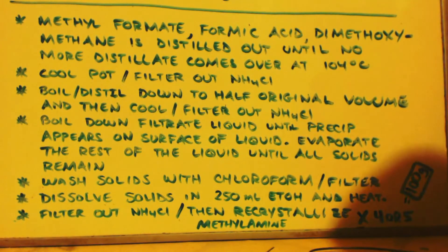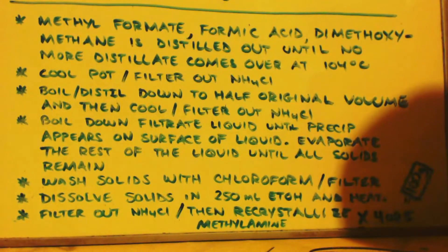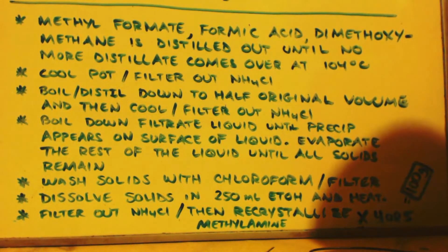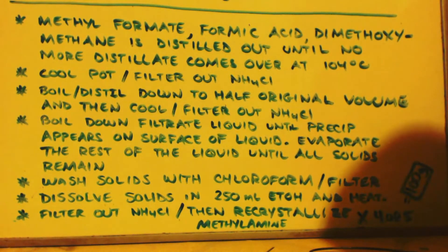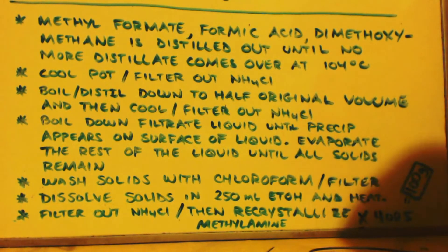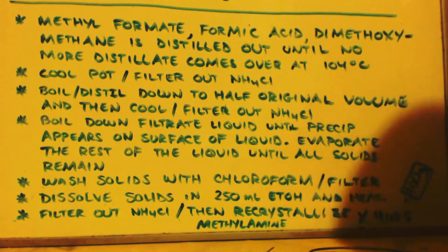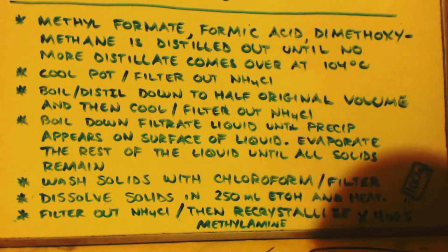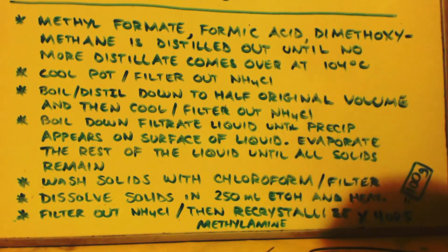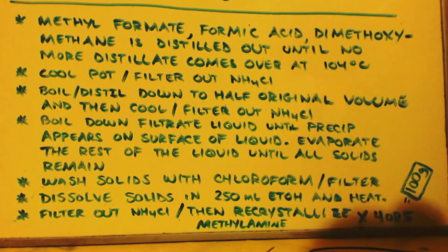Now boil down the liquid as far as you can — you don't want to break your glass. Once you have a lot of solids, use warm heat to evaporate the rest of the liquid. Once it's mostly dry, throw some chloroform in — enough to cover all your solids — and stir it up. Let it sit for about 20 minutes. Dimethylamine is soluble in chloroform so it will dissolve into it, whereas your product methylamine is not soluble in chloroform and will stay as a solid.